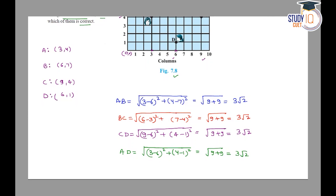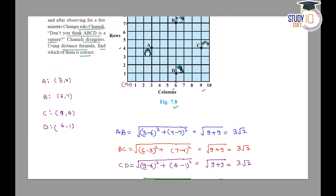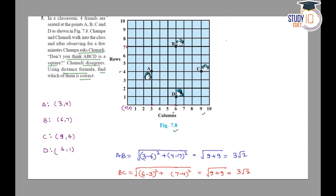4 distance जब भी बराबर आएंगी, तो आप तुरंत यह नहीं बोल सकते कि वो square होगा, क्योंकि rhombus की भी 4 distances बराबर होती हैं। Rhombus और square में differentiate करने के लिए diagonal की length निकालनी पड़ती है। Square में दोनों diagonals की length बराबर होती है, जबकि rhombus में ऐसा नहीं होता। तो ABCD का square बनाओगे तो दो diagonals बनेंगे — AC और BD।